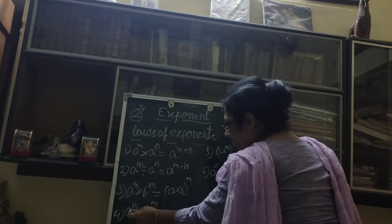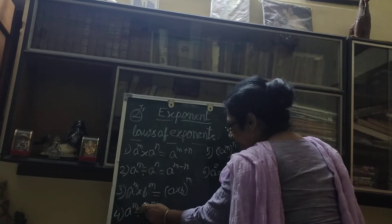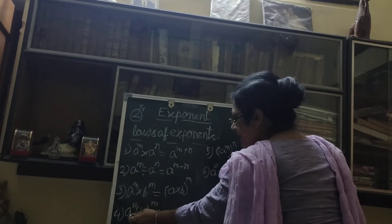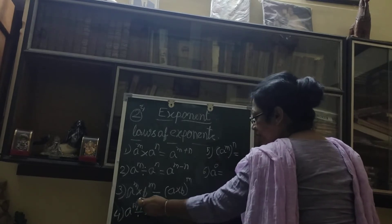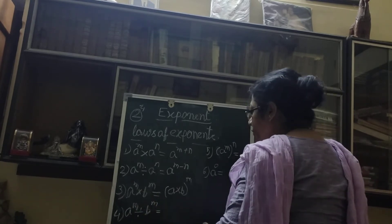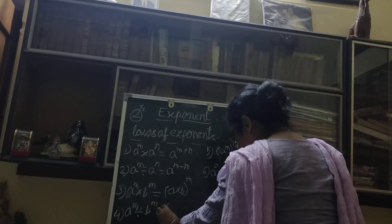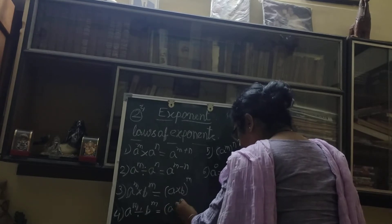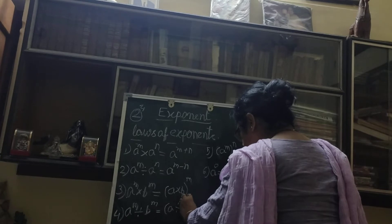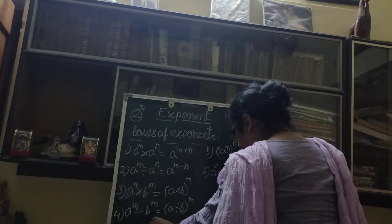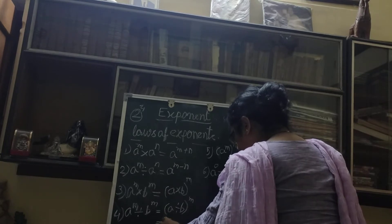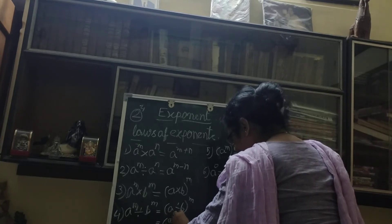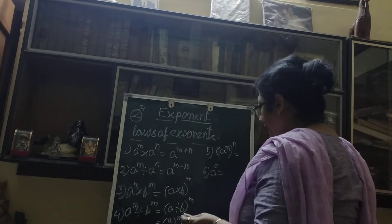Again, a to the power n divided by b to the power n. Here also the bases are different — one is a, another one is b — but the powers are both the same. So what we will do: we write it as (a divided by b) to the power n, or we can write it as (a/b) to the power n.